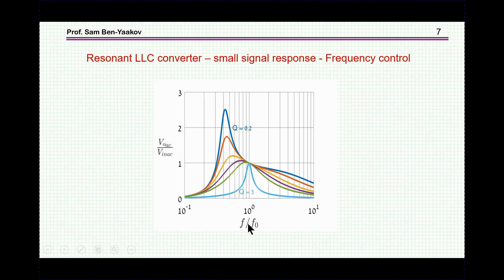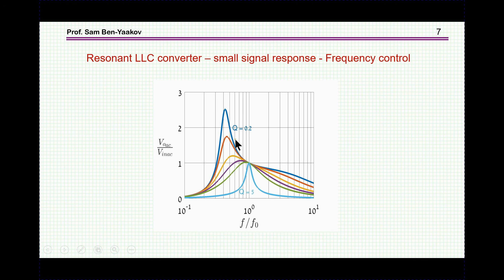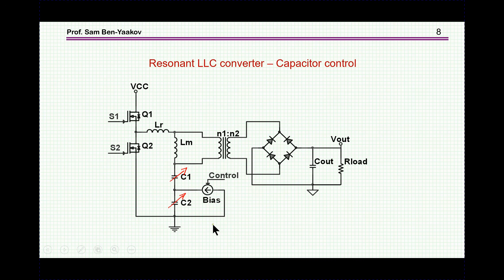This is a typical normalized frequency response. We see the nice feature that in this region the converter is not very sensitive to R_ac or load resistance. Q is a function of the load resistance, representing different loads, and therefore the span of frequency needed to control this resonant LLC converter is not very large — one reason why this converter is popular.